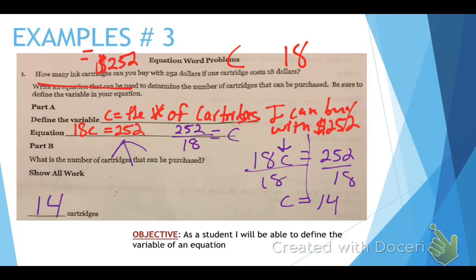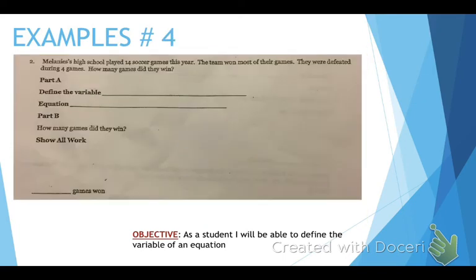So we need to go ahead and solve it because it says what is the number of cartridges that can be purchased. 18C equals 252. Draw my line. Do the opposite operation of multiplying by 18, which is dividing by 18. And you're going to get C equals 14 cartridges. 14. And see how it puts the answer down here already? You just need to write it in there. 14 cartridges. That is example number one, or sorry, question number one on your worksheet.